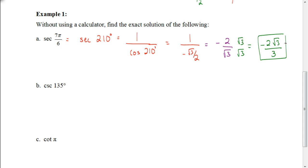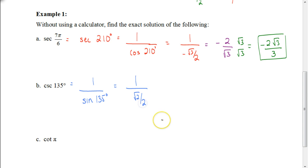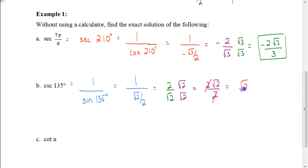Let's try the cosecant of 135 degrees. We're dealing with the cosecant, so that's 1 over the sine of 135 degrees. The sine of 135 degrees is √2/2, so it's 1 over √2/2. We take the reciprocal of the denominator: 2/√2. To rationalize, we multiply numerator and denominator by √2, giving us 2√2/2. The 2s cancel, leaving us with just √2.